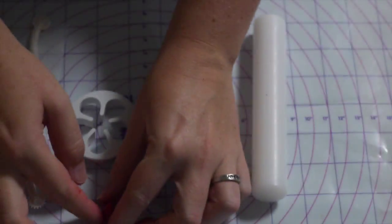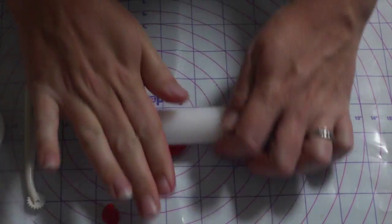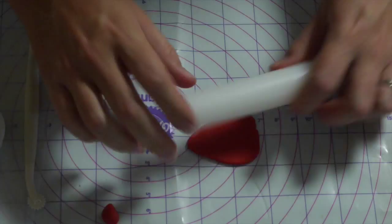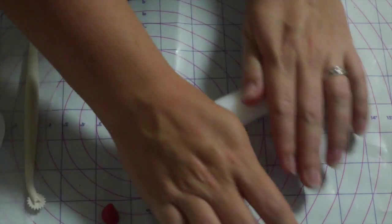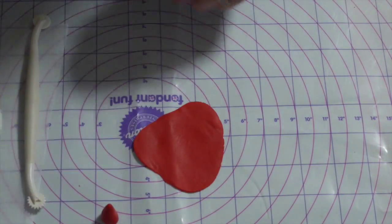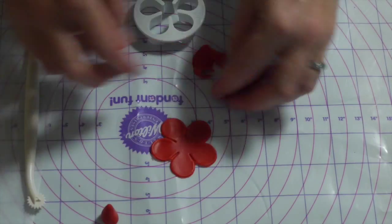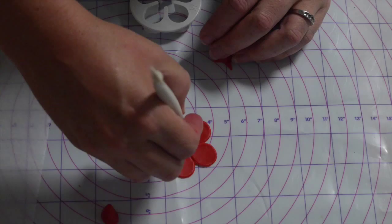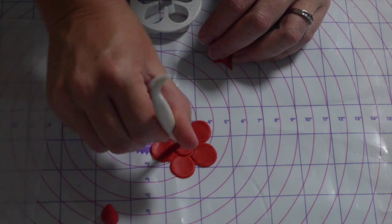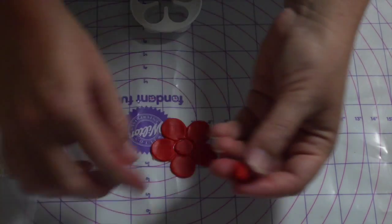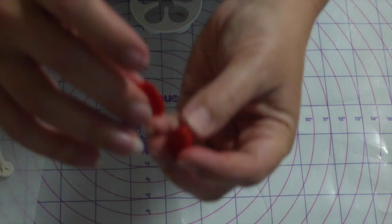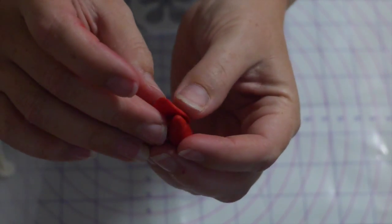Next you want to roll out more of your red fondant and using your rose petal cutter just cut that section out. Then using your little rotary cutter cut out the center. You don't need the center, you just want the petals individually. Then we're going to start with three petals to do our middle section of our rose.